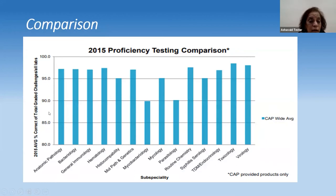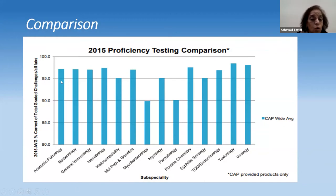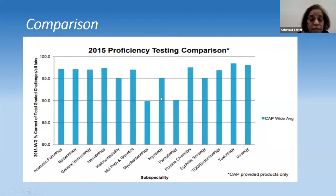A 2015 PT comparison survey done by CAP shows the average percentage correct for total graded challenges across various laboratory sections. Most sections were at 95% or above for the various challenges. However, mycobacteria, mycology, and parasitology were areas where labs need to gear up and improve performance.